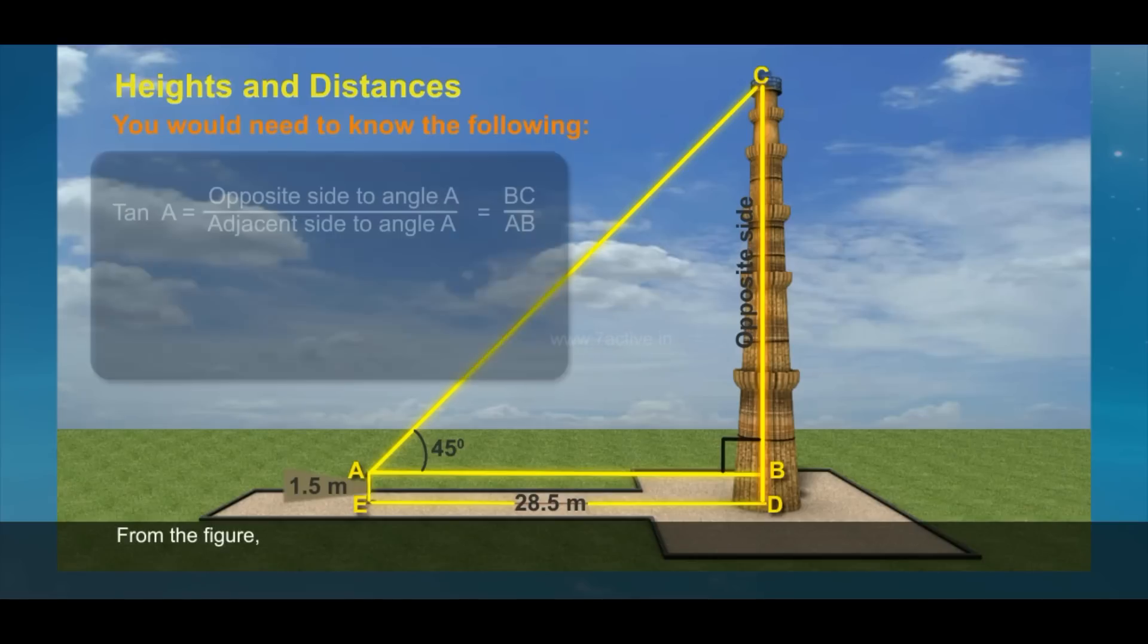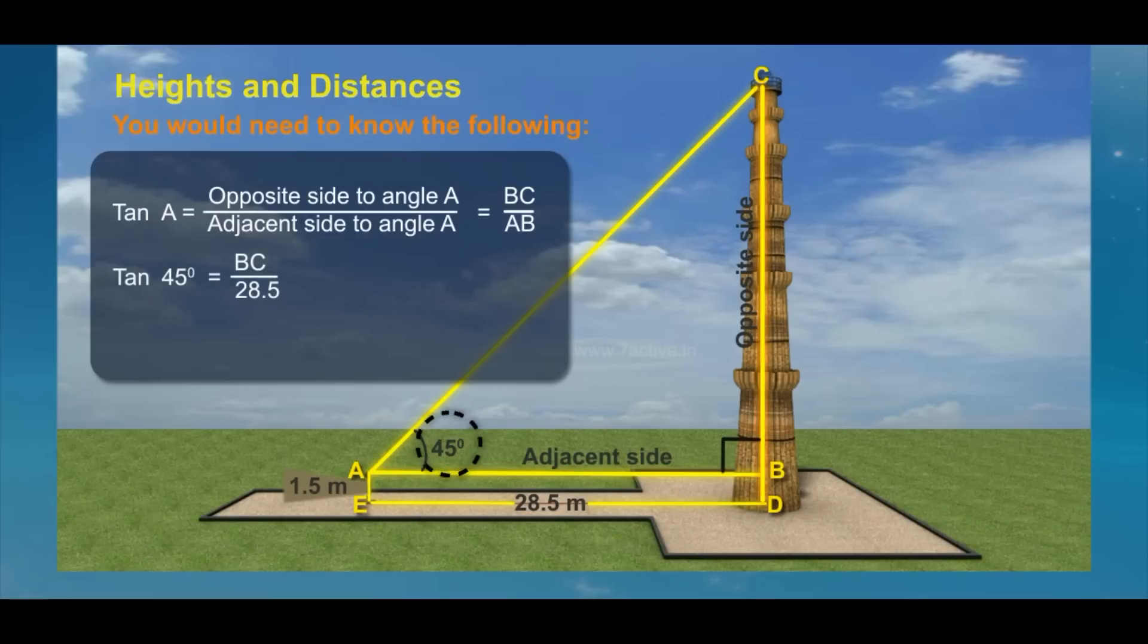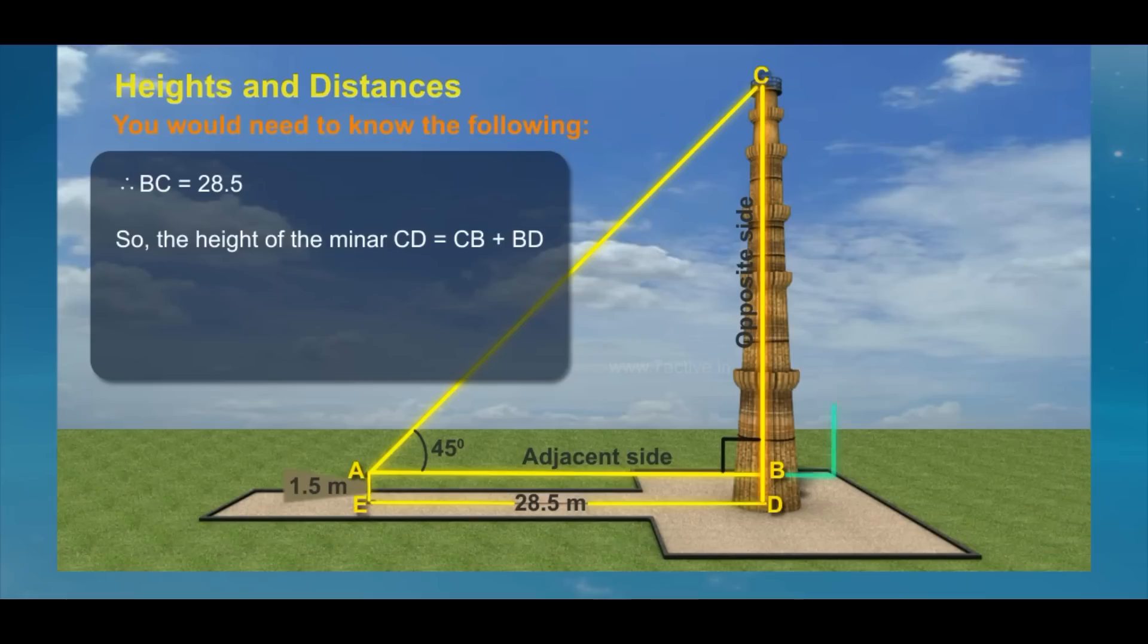From the figure, tan A equals opposite side to angle A divided by adjacent side to angle A, which equals BC divided by AB. Tan 45 degrees equals BC divided by 28.5. Since tan 45 degrees equals 1, therefore BC equals 28.5.